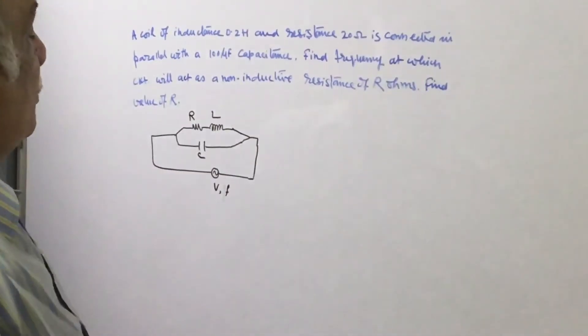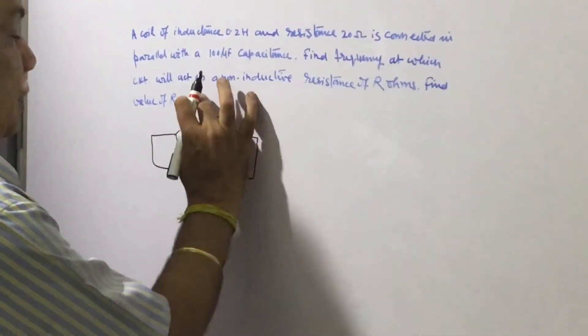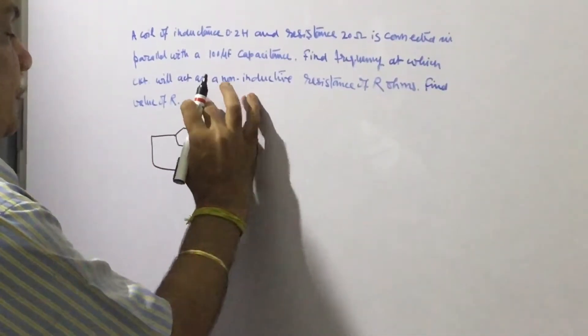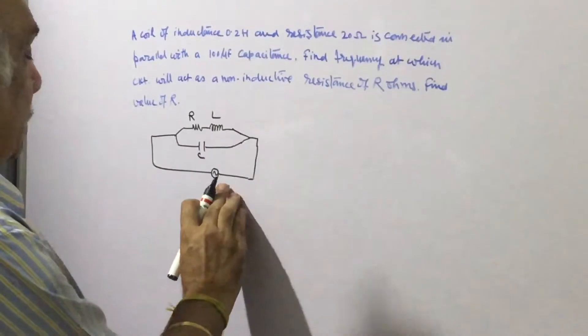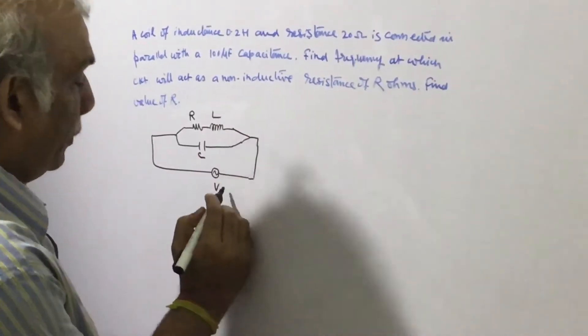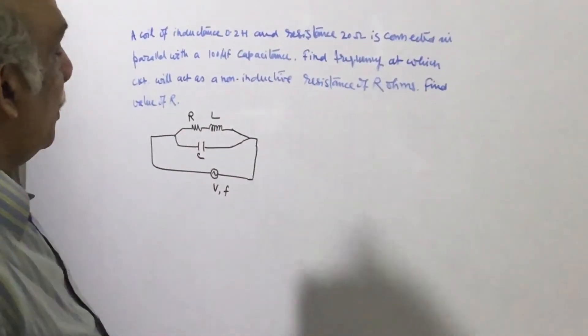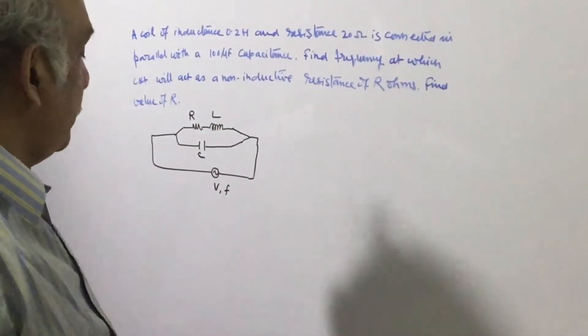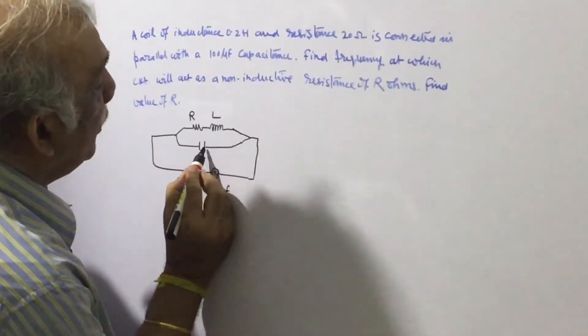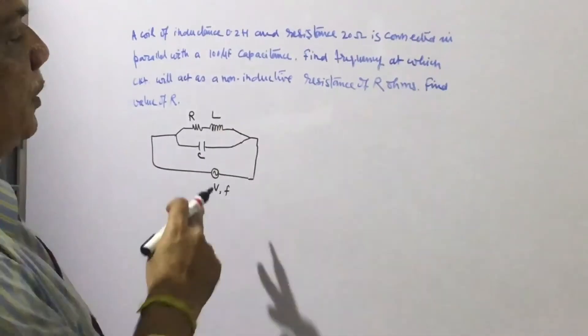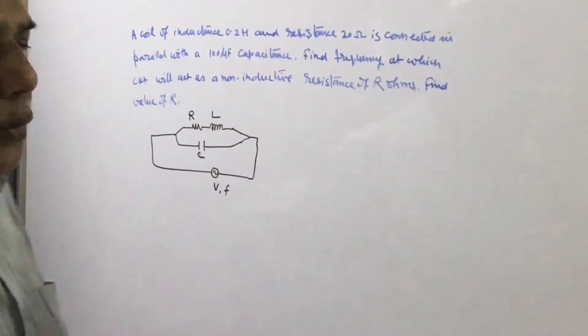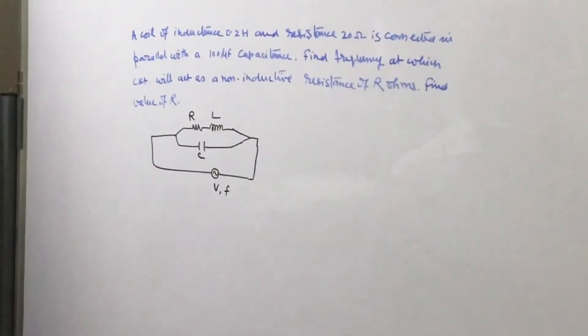Now, the question is, in the frequency, the source is varied. The impedance of a circuit changes. Now, we have to find out the value of F at which this circuit offers purely resistance.